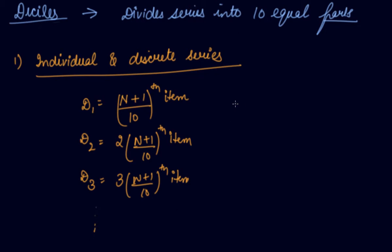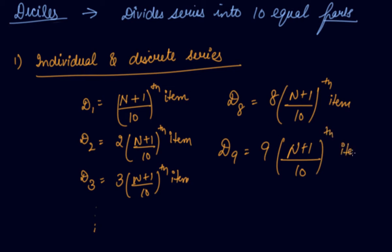And so on. If you have to find out the deciles 8, it will be 8 n plus 1 by 10th item. If it's the deciles 9, it means 9 n plus 1 by 10th item. So this is how you find out the deciles in the case of individual and discrete series. Arrange the data in the ascending or descending order and find out the deciles.